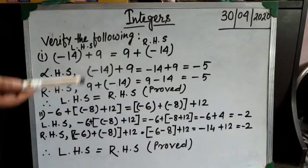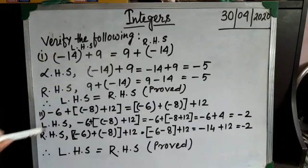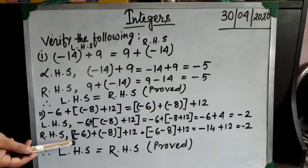The result is minus 2. Now complete the RHS part. In the same way, first of all we have to complete the bracket work. Complete the third bracket work.